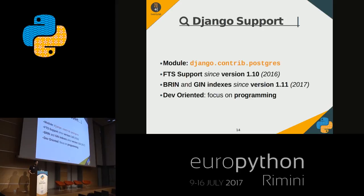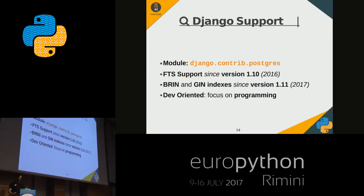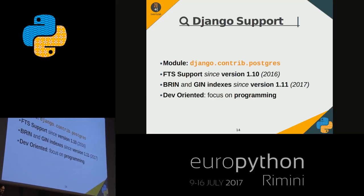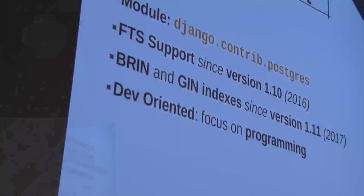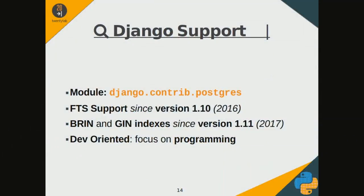The module django.contrib.postgres contains the support for full-text search. This support has been present in this module since version 1.10. BRIN and GIN indexes have been added in version 1.11. The GIN index is very useful to speed up full-text search. The use of Postgres full-text search in Django is more developer-friendly for me.